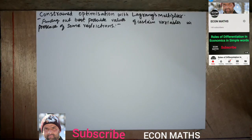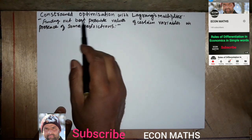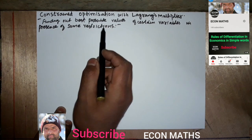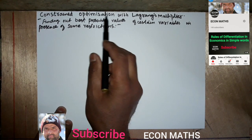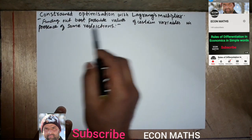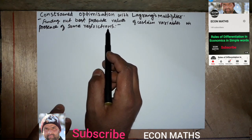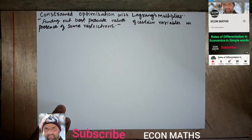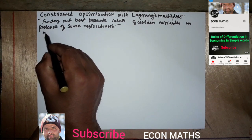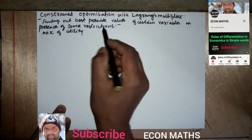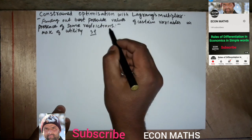Hi, this is Elal. In this video we will discuss constrained optimization with Lagrange's multiplier. Constrained optimization means finding out the best possible values of certain variables in the presence of some restrictions. For example, maximization of utility or satisfaction subject to a budget constraint.